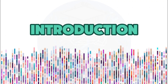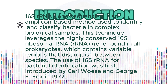16S rRNA gene sequencing is an amplicon-based method used to identify and classify bacteria in complex biological samples. This technique leverages the highly conserved 16S ribosomal RNA gene found in all prokaryotes, which contains variable regions that distinguish between species. The use of 16S rRNA for bacterial identification was first introduced by Carl Woese and George E. Fox in 1977.